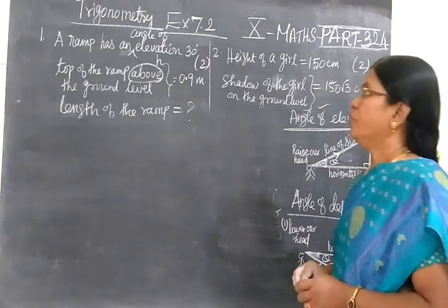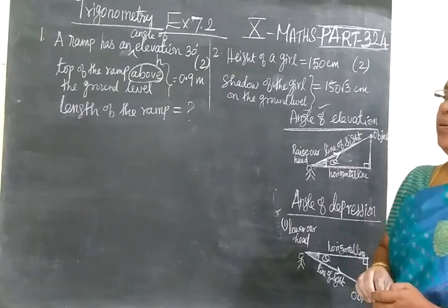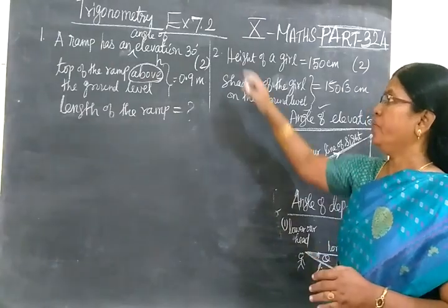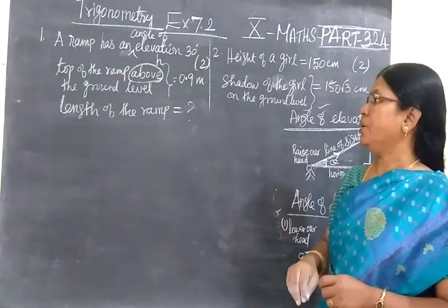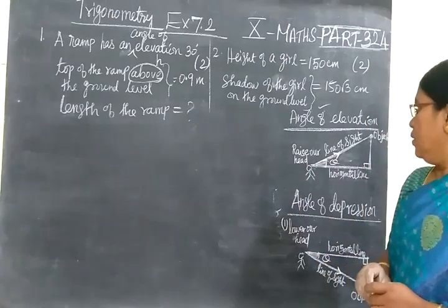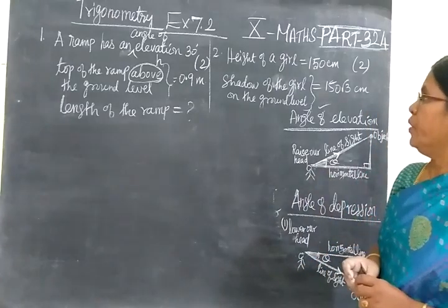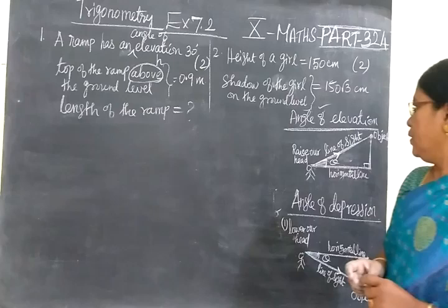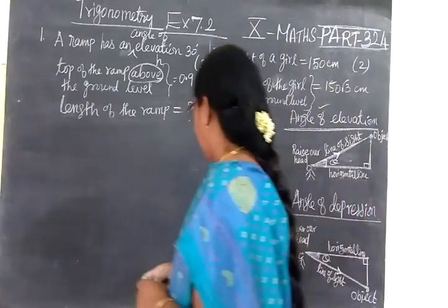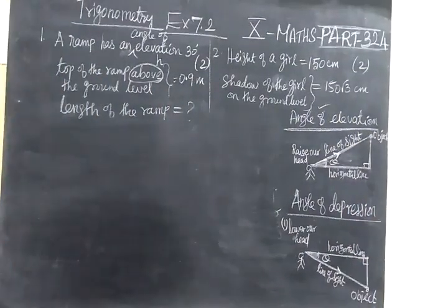Now we see Part 3.24, Exercise 7.2 in trigonometry. Already we have done 7.1 previously. Now we see Exercise 7.2, first and second question. Here we learn two concepts: angle of elevation and angle of depression.